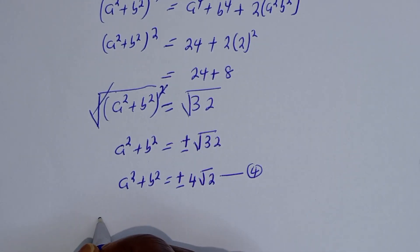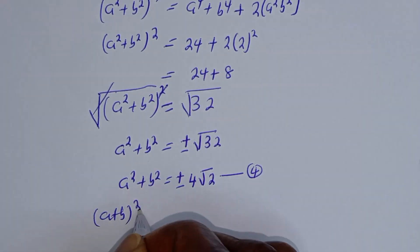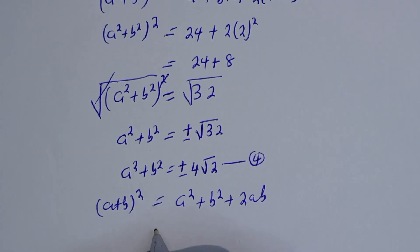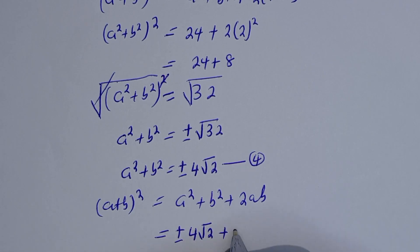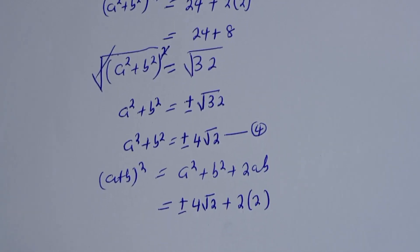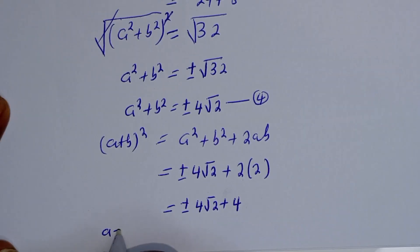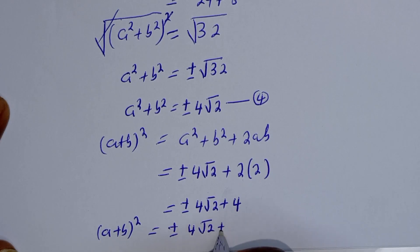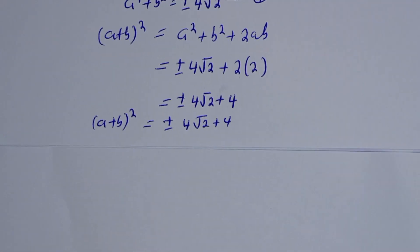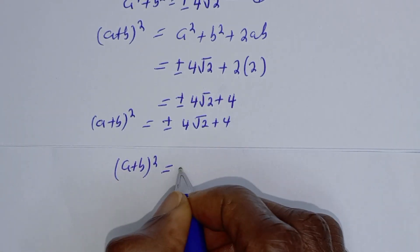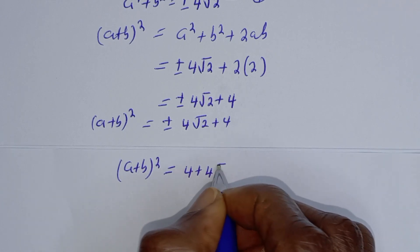Also take note of this rule: (a plus b) all squared equals a squared plus b squared plus 2ab. We know a squared plus b squared is plus or minus 4 root 2, and 2ab is 2 times 2 equals 4. So (a plus b) squared equals plus or minus 4 root 2 plus 4.